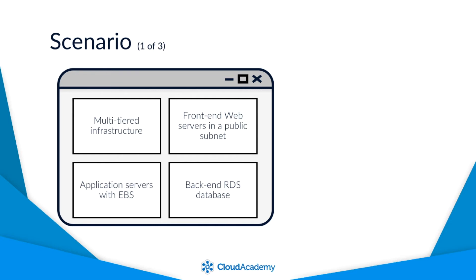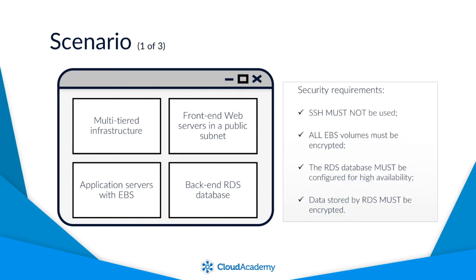We have been told that from a security perspective, SSH must not be used for the web server security group under any circumstance. Where used, all EBS volumes must be encrypted, the RDS database must be configured for high availability at all times, and data stored by RDS must be encrypted. Now obviously during deployment we can oversee the implementation and ensure that each of these elements are met. We can make sure the security groups are correctly configured, storage encryption is activated, and that multi-AZ is configured for high availability for the RDS instance.